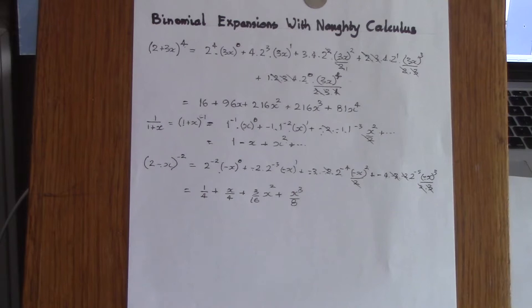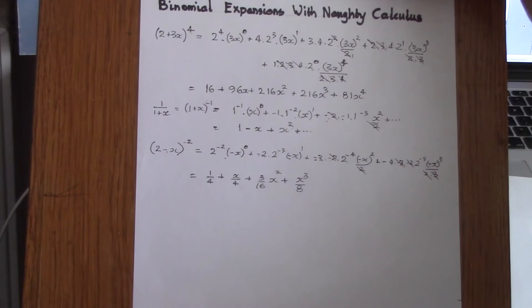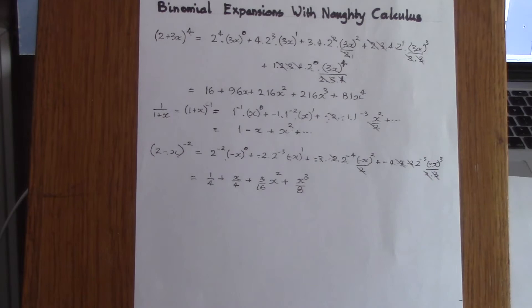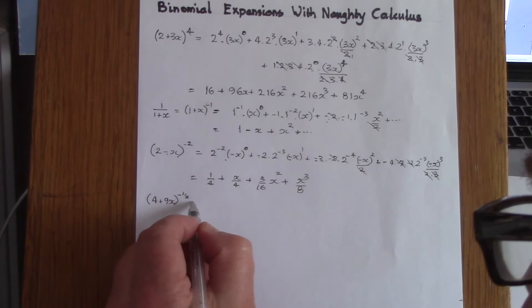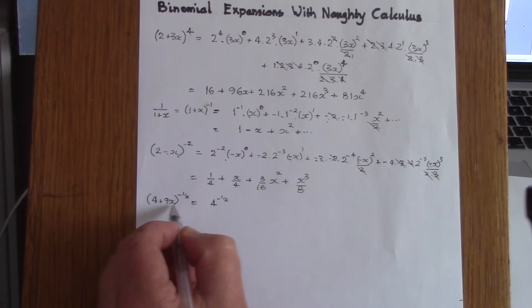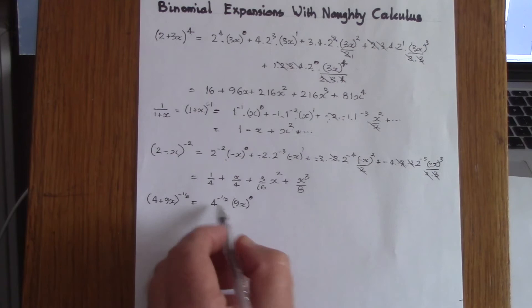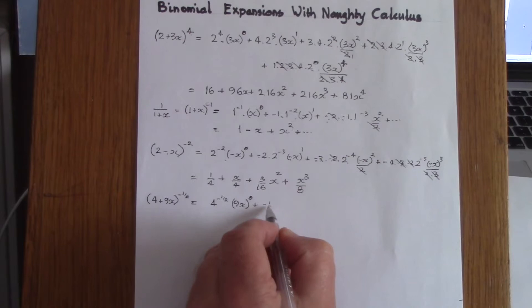Now let's look at an expansion with a negative fraction. Let's say we want to find (4 + 9x) to the power of minus one half. As before, we set down the first term to the power of minus a half and the second term to the power of zero.